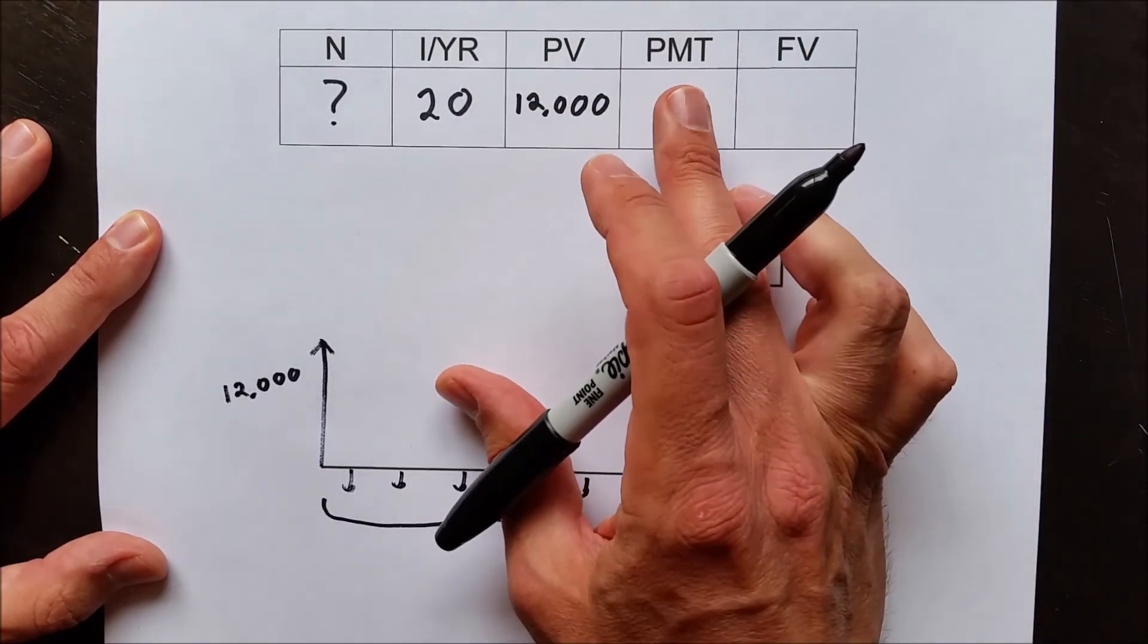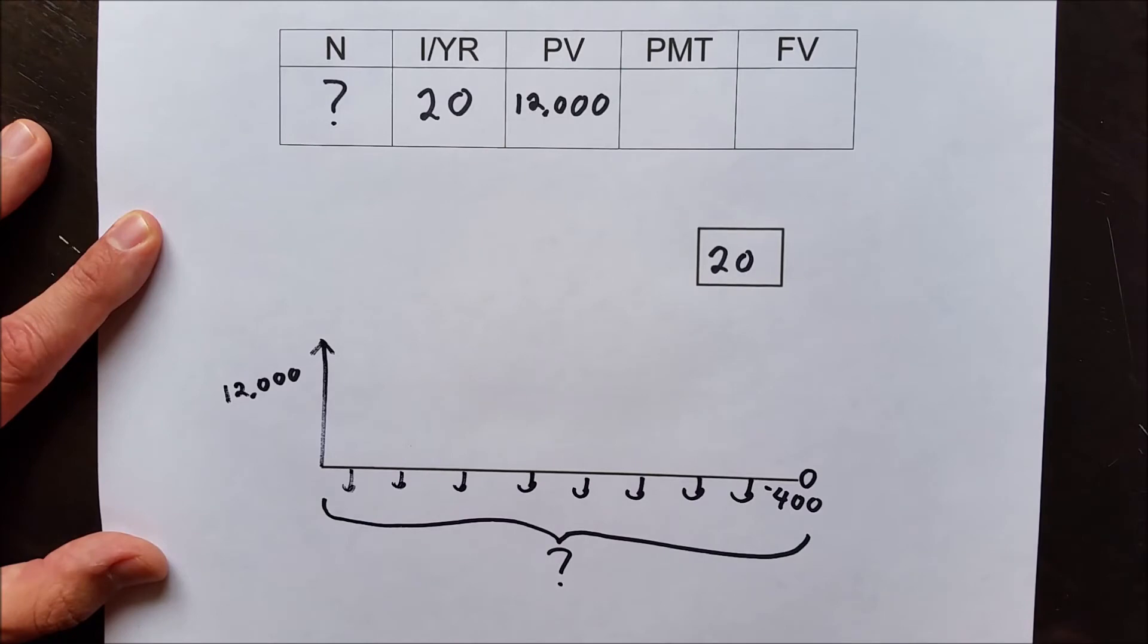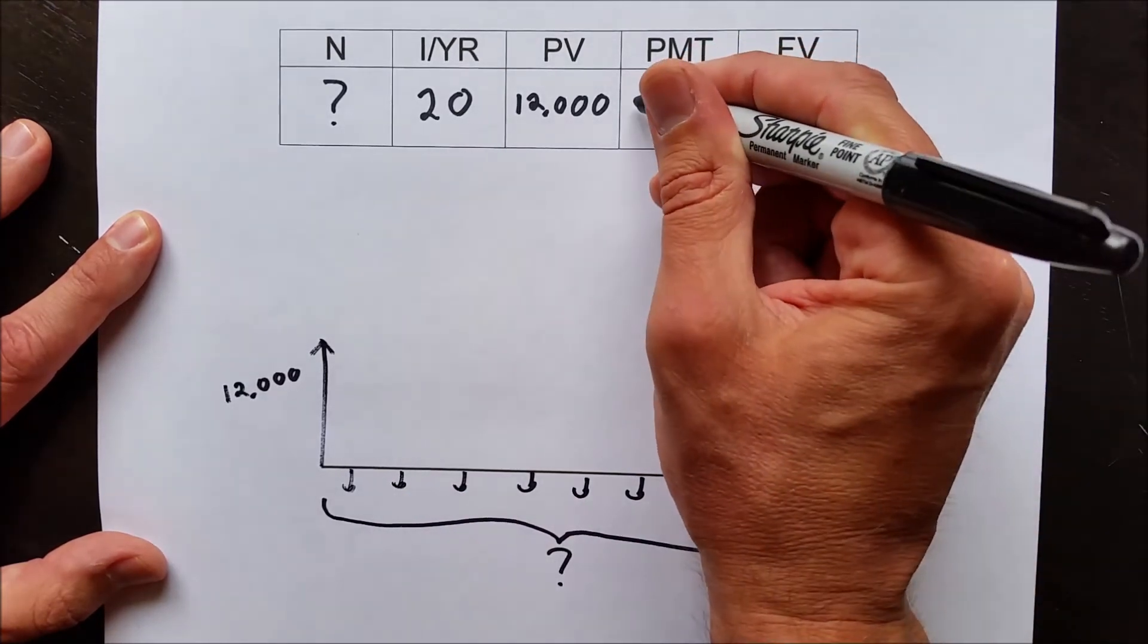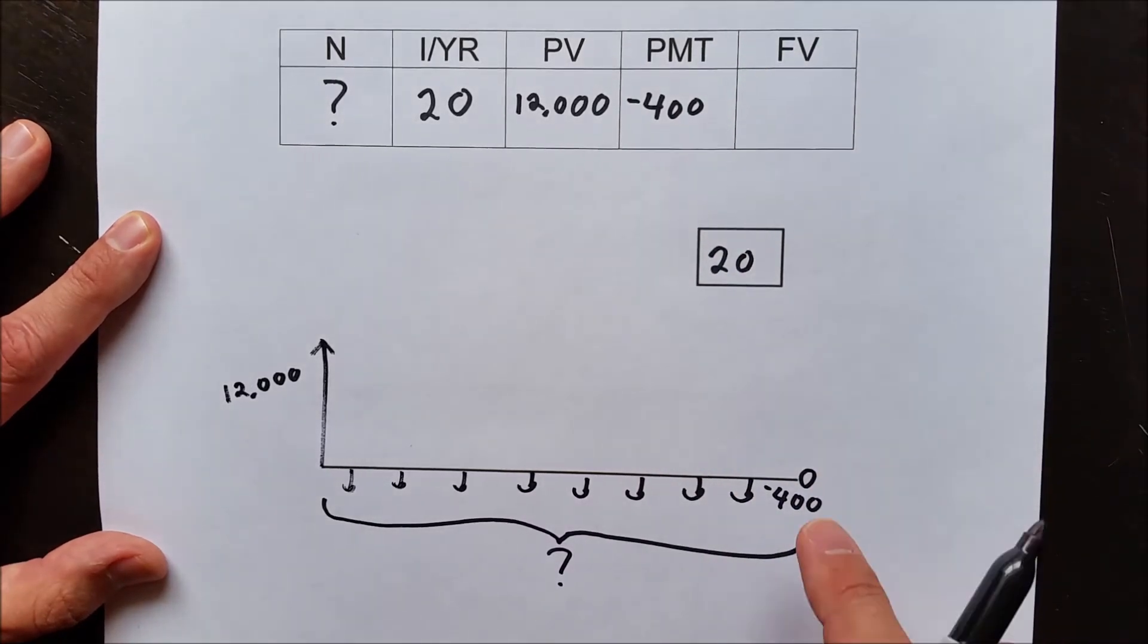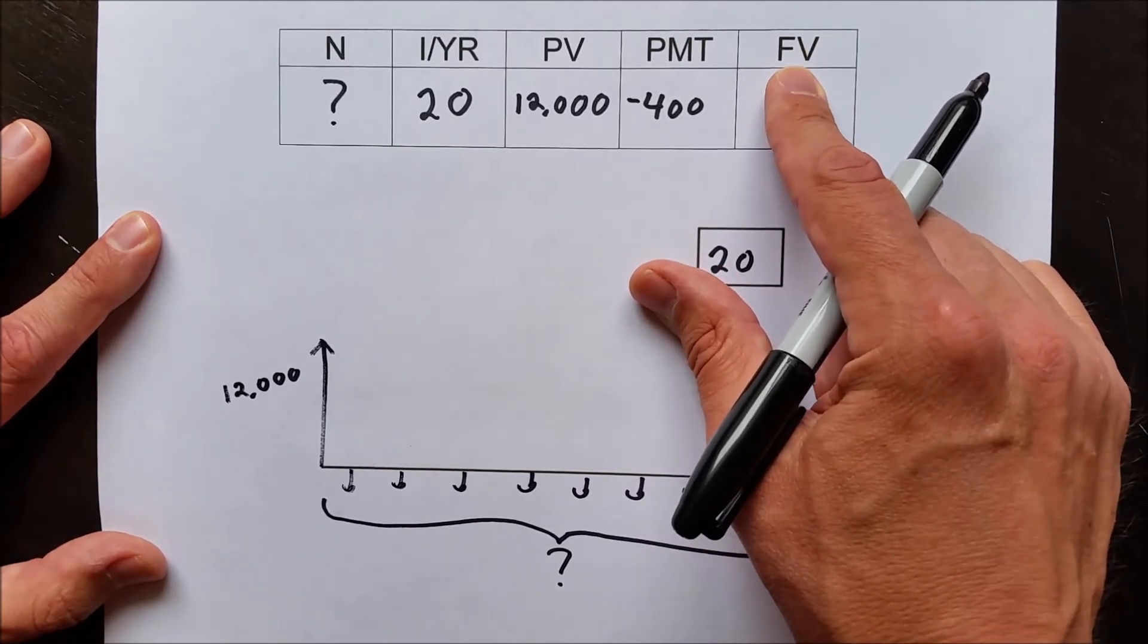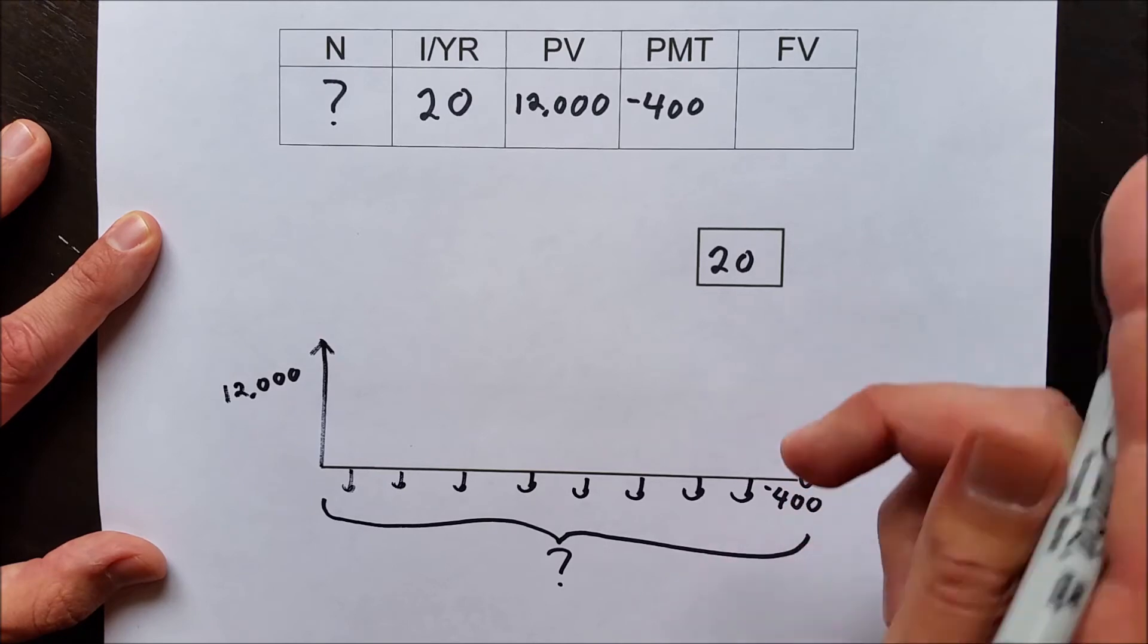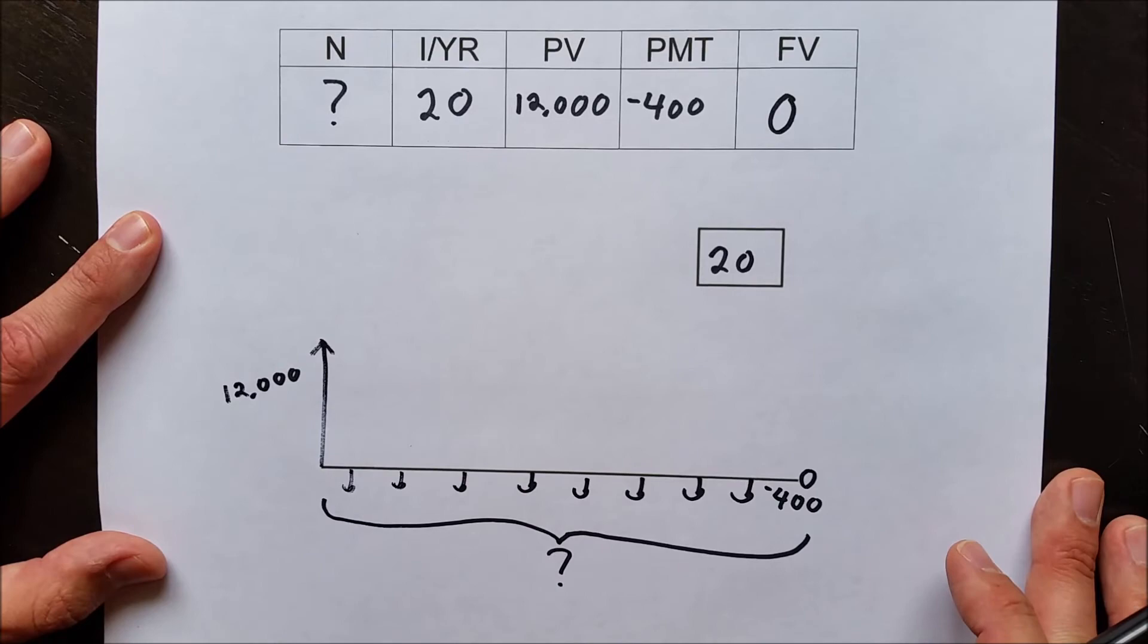PMT are monthly payments. In this situation, we know that he's making $400 monthly payments until it's paid off. Since that money is leaving his pocket, we put a negative 400. Then finally, future value. FV stands for future value. That's the one-time event that happens sometime out in the future. We know that Tom's goal here is to pay off the debt completely, so we have that zero here showing it's paid off. So that's what the future value will be. It'll be zero.